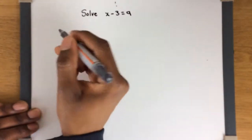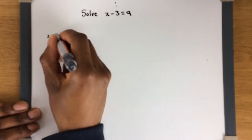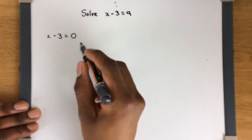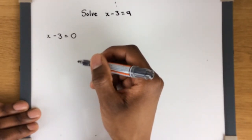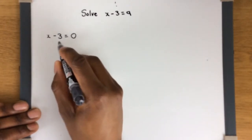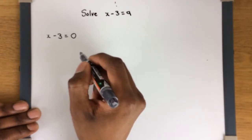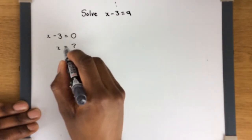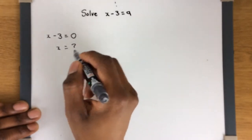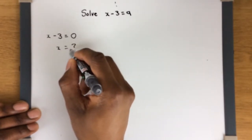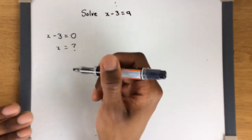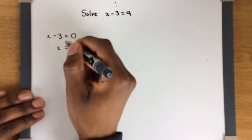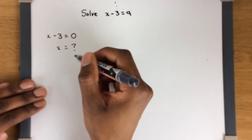We could start with something like x minus 3 equals 0. Now to solve this equation, what you want to do is get x on one side on its own, with numbers on the other side. Because once you have x equal to a number, you know what x is. So the whole point of algebra is to get x on its own equal to a number.